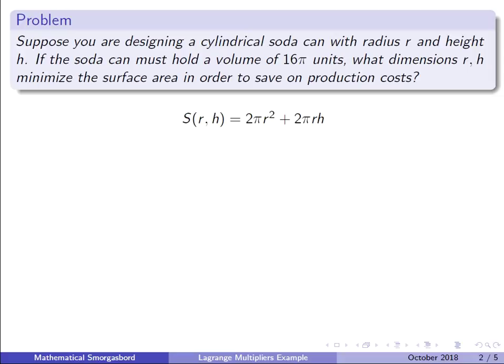First, we're going to write down the surface area: S(r,h) = 2πr² + 2πrh. This refers to the two circular faces, and the rectangular face that you get when you cut open the cylinder and unravel it. Next we have the volume: V(r,h) = πr²h = 16π. The first equation we'll call the optimizer equation—this is what we want to minimize or optimize in general. And this equation will be our constraint.